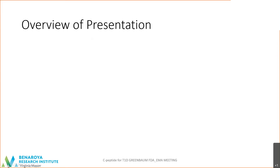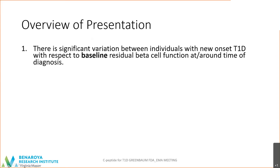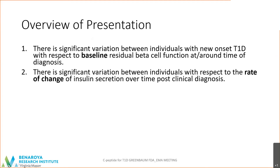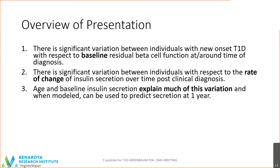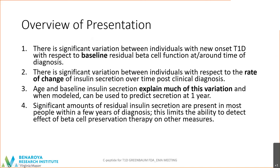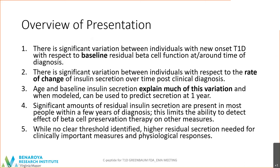The overview of my presentation is five points. There is significant variation between individuals with new-onset diabetes with respect to baseline secretion around the time of diagnosis, as well as the rate of change of secretion in that period of time. However, age and baseline secretion explain much of this variation, and when modeled, can be used to predict secretion at a year. Significant amounts of residual insulin secretion are present in most people within a few years of diagnosis, and this limits the ability to detect the effect of beta cell preservation on other measures. And finally, while no clear threshold can be identified, higher residual secretion is needed for clinically important measures and physiological responses.